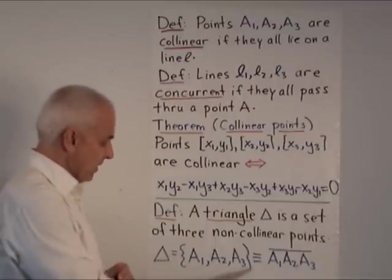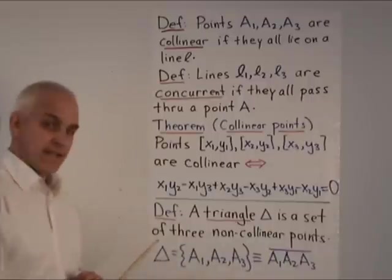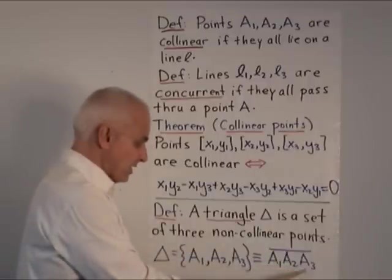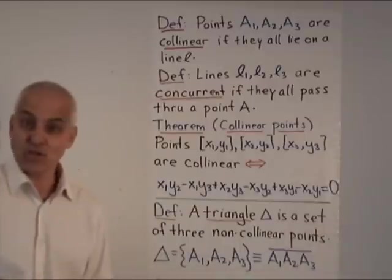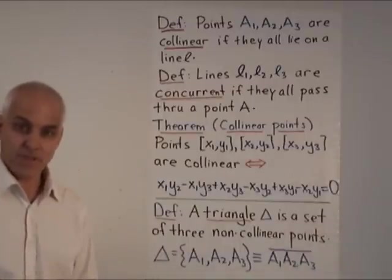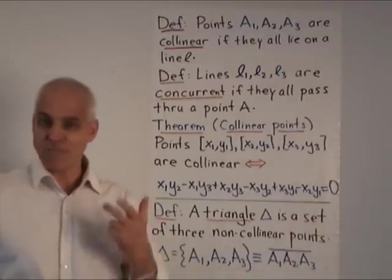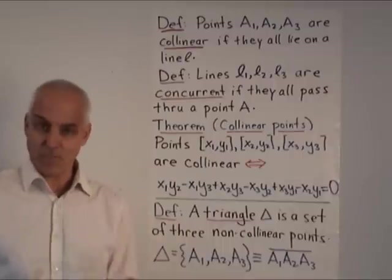For example here's a triangle. It's a set consisting of three things. Each one of these is a point. And we introduce the notation that instead of writing it in terms of sets like this, we'll just write the three points with a bar over it. That means the triangle whose points are A1, A2, and A3.